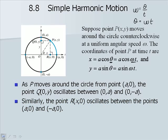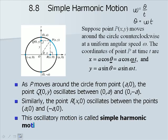On our previous slide, our weight oscillates between A and negative A, so our amplitude would be A. This oscillatory motion is called simple harmonic motion.